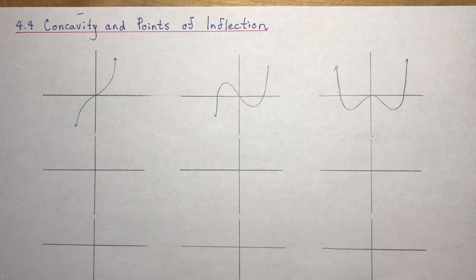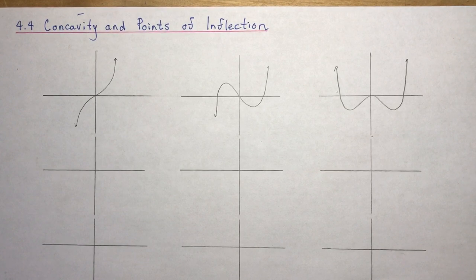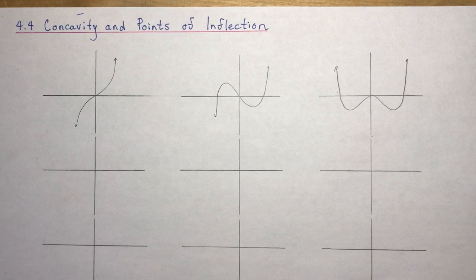4.4 is concavity and points of inflection. This is the last little piece of the puzzle that you need to learn in order to be good at curve sketching, which we'll summarize in the next lesson where we do all kinds of different examples of different types of functions that you will go through the complete algorithm to find the graph.